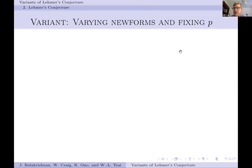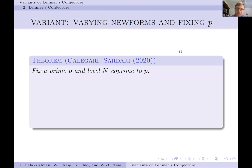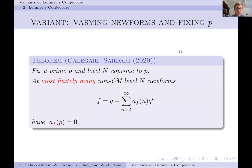One way to vary the problem of Lehmer is to fix a prime p and ask for how many newforms the p-th coefficient is 0. This leads to a result of Calegari and Sardari from 2020. They fix a prime p and level N co-prime to p, and prove that at most finitely many non-CM level N newforms vanish at their p-th coefficient. This gives strong theoretical evidence that for non-CM newforms, vanishing at the p-th coefficient is quite rare.